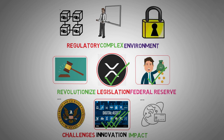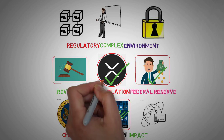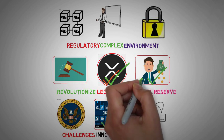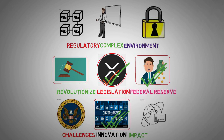Moreover, the emphasis on consumer protection and innovation could play to Ripple's strengths as a trailblazer in blockchain-based financial transactions. For investors, navigating these uncertain waters requires vigilance and strategic planning. While the new bill may usher in a period of turbulence, it also carries the promise of long-term growth and legitimacy for Ripple XRP. Diversification, patience, and staying informed are key strategies in weathering the regulatory storm. In conclusion, the Digital Asset Market Structure and Investor Protection Act has the potential to reshape the digital asset landscape, with Ripple XRP at the forefront of this transformation.